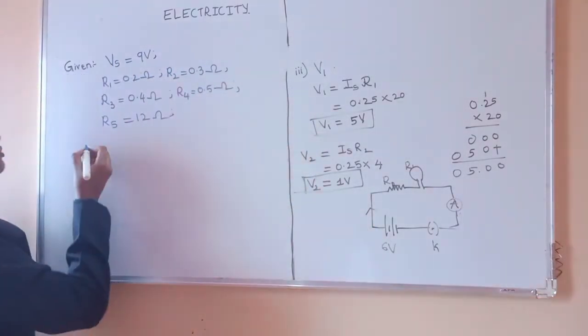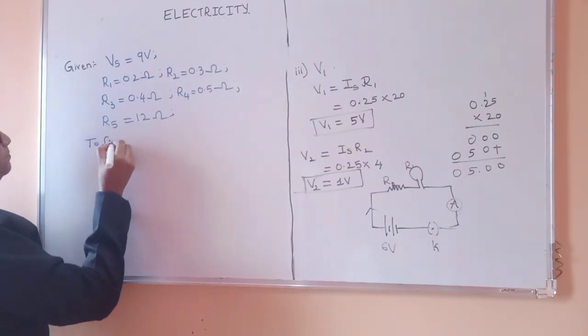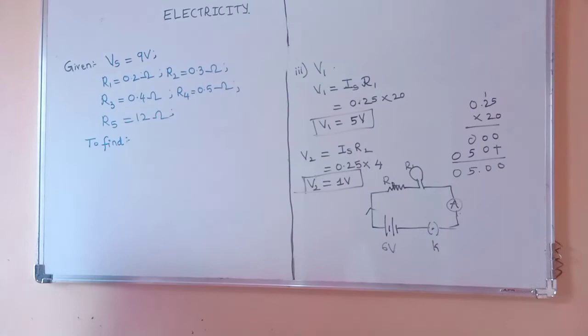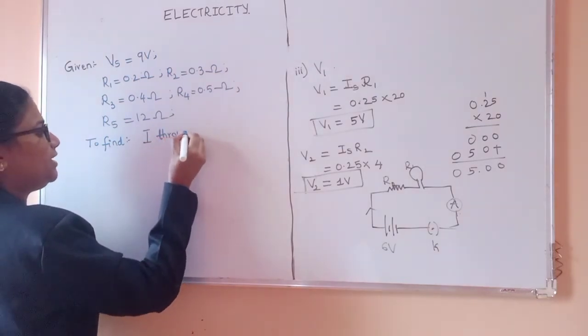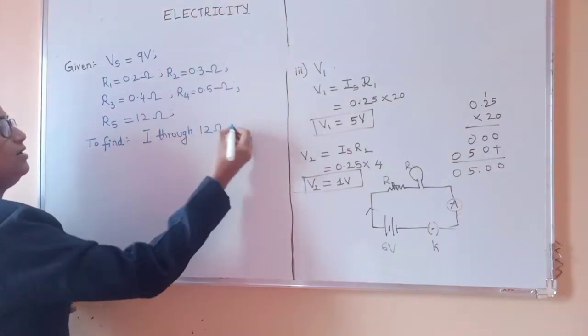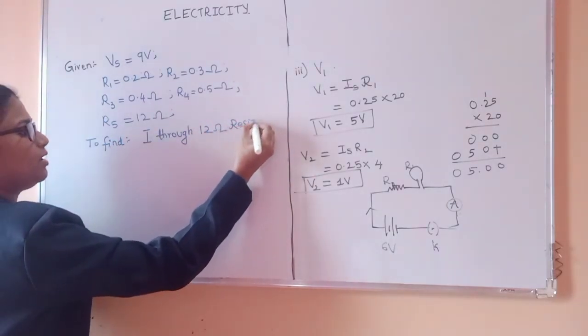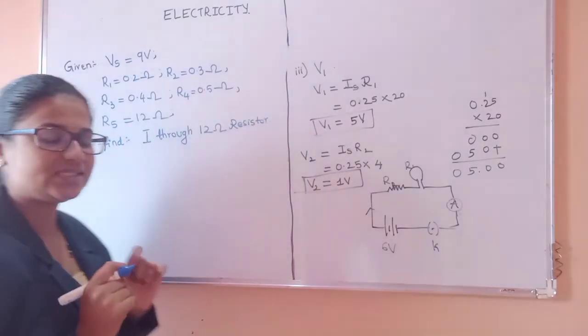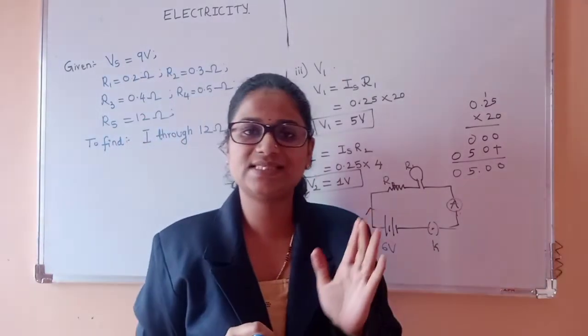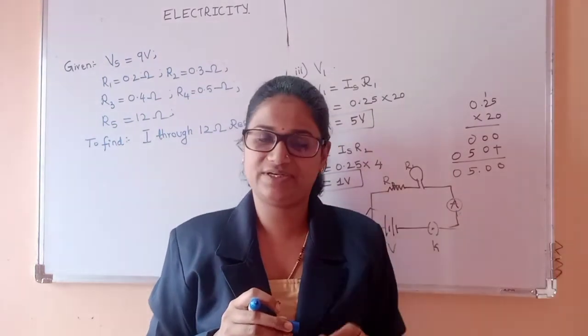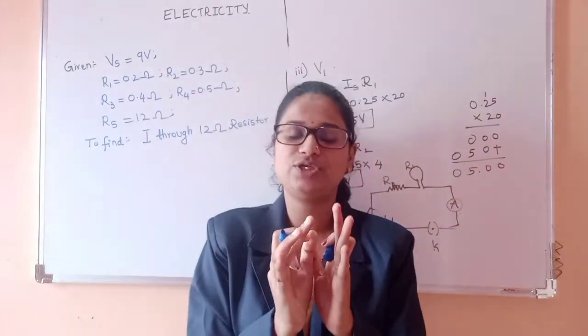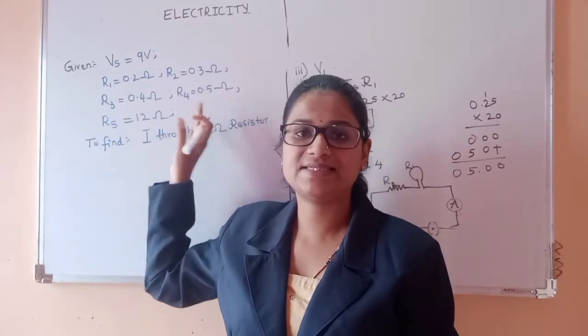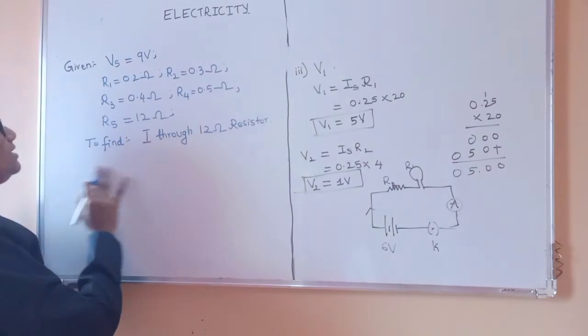Next what we have to find here - to find, they asked how much current would flow through the resistor, that is current through 12 ohm resistor. As we know that in the series combination current remains the same, current will not be divided or distributed. So here if we find the total current in the circuit, it will be the current flowing through the resistor which has 12 ohm.